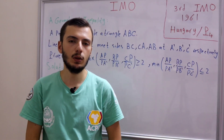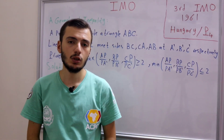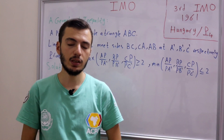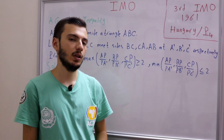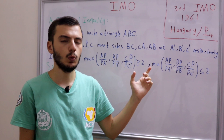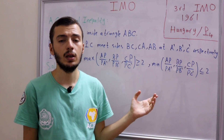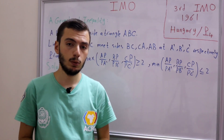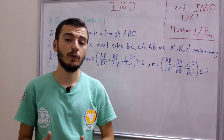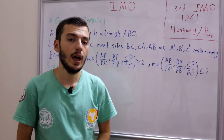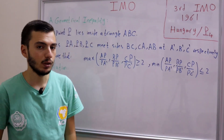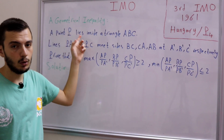Hi everyone and welcome to my YouTube channel. We're continuing our IMO past problems playlist. In this video we'll be discussing the third IMO, 1961, which was held in Hungary. In the previous video we discussed problem 1, which was about solving a system of equations. In this video we'll be discussing problem 4, which is about a geometrical inequality.